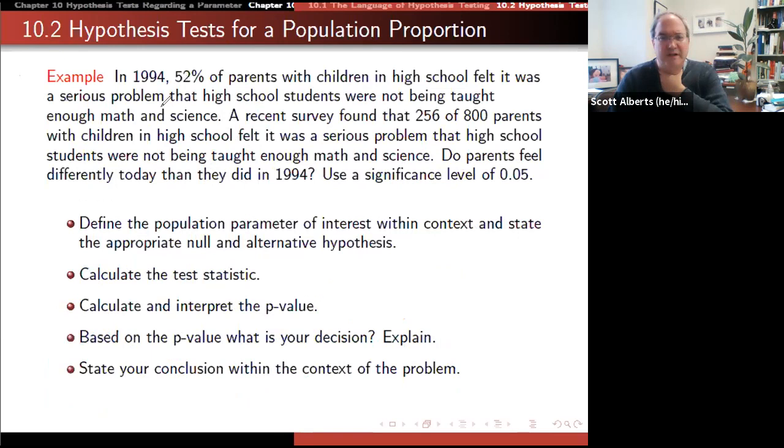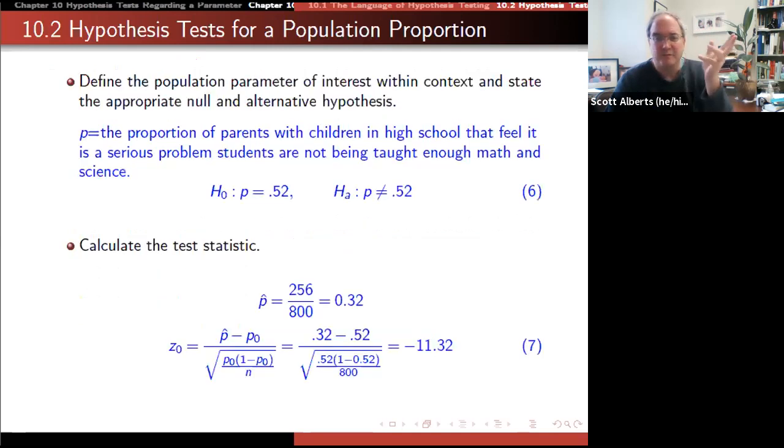Here's another example. In 1994, 52 percent of people thought not enough math and science was taught in high school. A recent study found 256 out of 800. The question is, is it different? This is a two-sided test because it doesn't have a direction. We're just investigating whether it's different. We start with the old data of 52 percent. Our null hypothesis is p = 0.52. Our alternative has the not equal to sign, which indicates it's a two-sided test. We find our sample proportion: 256 out of 800, that's 32 percent.